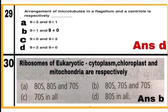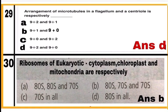Question 29: Arrangement of microtubules in a flagellum and a centriole respectively — option D. In a flagellum the arrangement is 9+2, and in a centriole it is 9+0, as shown in the figure of question 28.